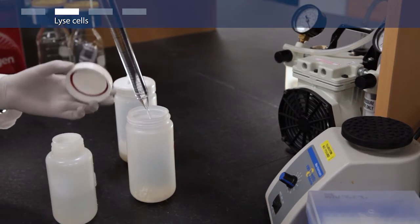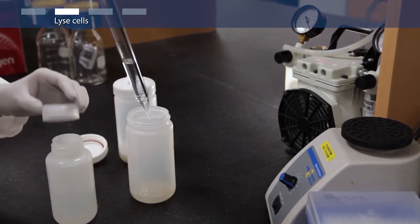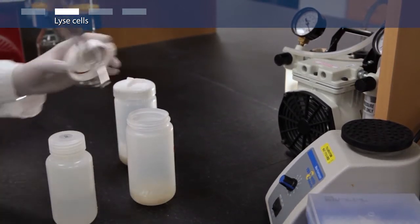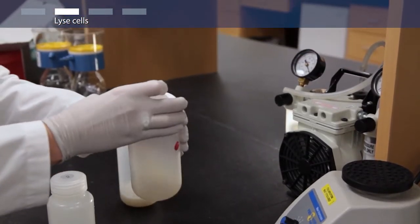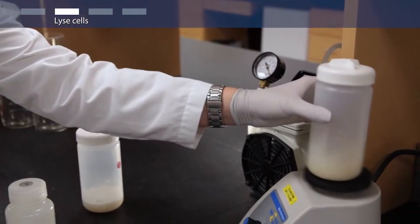Add 50 milliliters of resuspension buffer with RNase A to the cell pellet. Vortex until the sample is homogeneous.